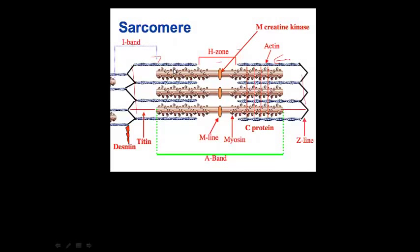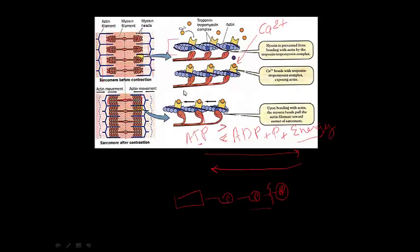At rest, the sarcomere would be at rest and the myosin crossbridges are not bound to the actin. But if the muscle fiber is stimulated, we get the release of calcium from the sarcoplasmic reticulum, which opens the active site, the myosin then binds, and when we get the breakdown of ATP, that energy is used to get those myosin crossbridges to ratchet.